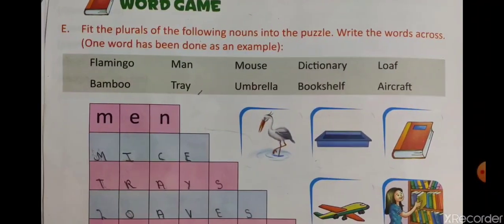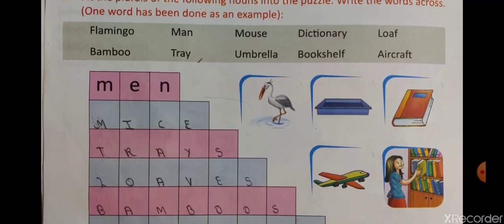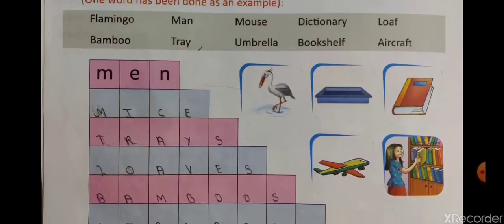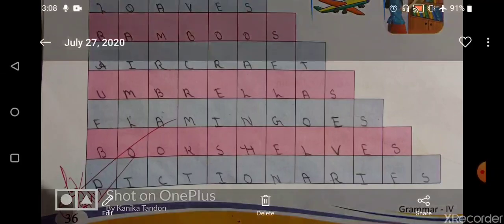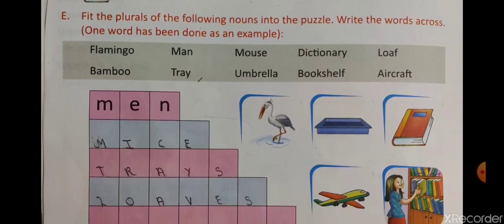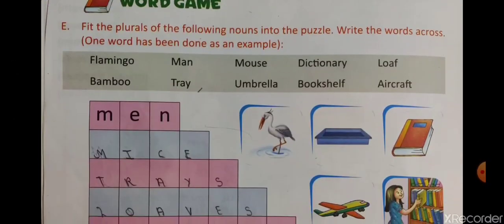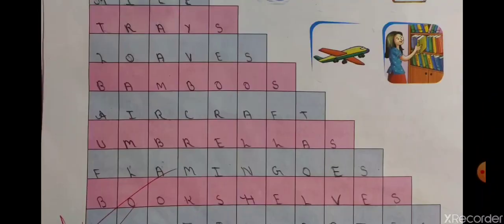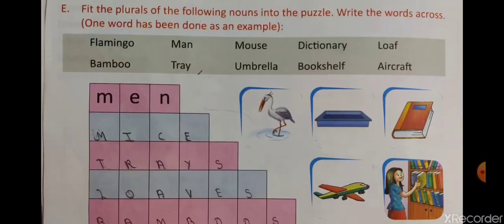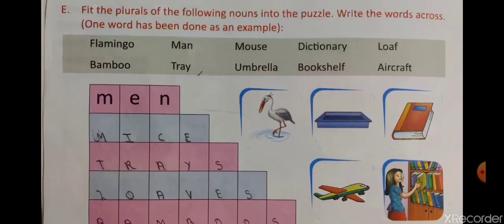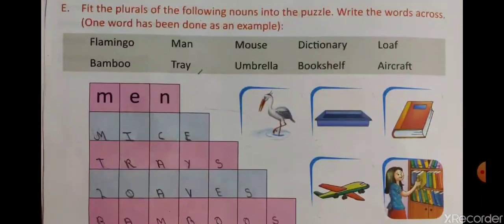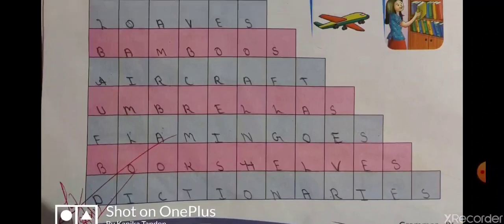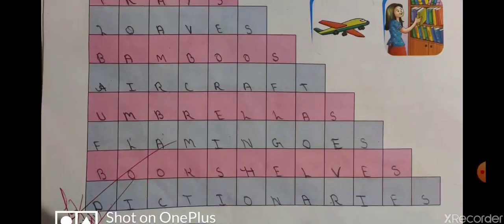We have to read these given words and write them in the boxes. First one is flamingo — flamingos. Man becomes men, mouse becomes mice, dictionary becomes dictionaries, loaves — loaf becomes loaves, bamboo becomes bamboos, tray becomes trays, umbrella becomes umbrellas, bookshelf becomes bookshelves, and aircraft remains aircraft only.